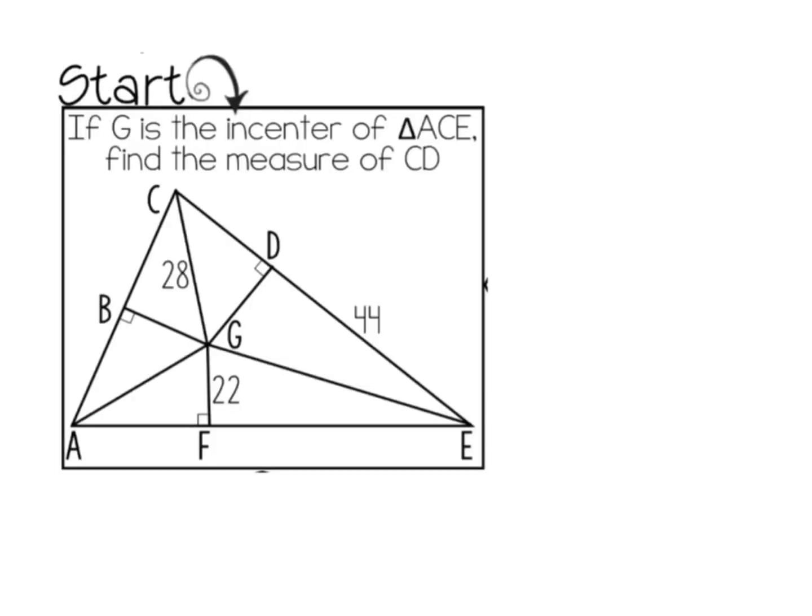Alright, so here's the first one. This is on the back side of that centroid maze. It says if G is the incenter, okay, so incenter - I'm thinking about angle bisectors, I'm thinking about how the incenter is equidistant from the sides.